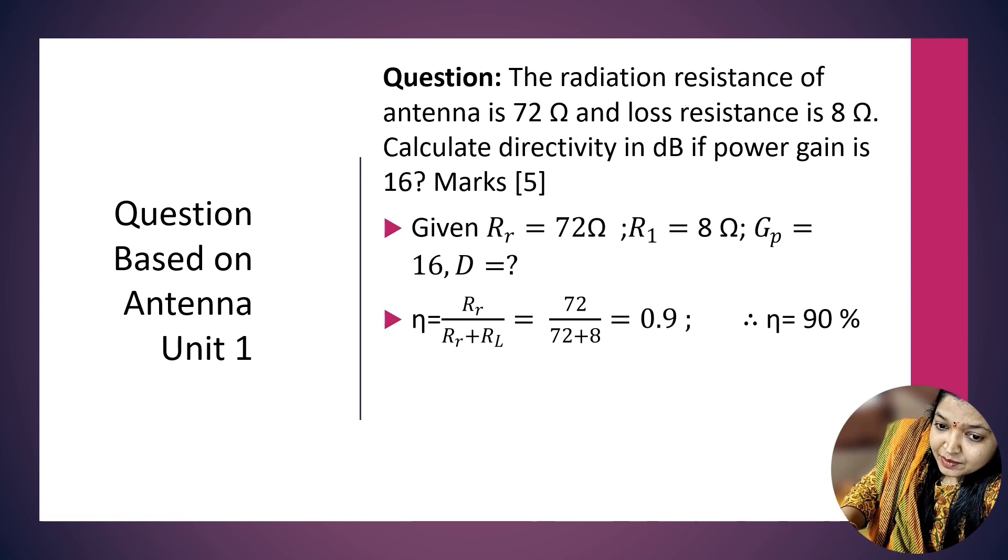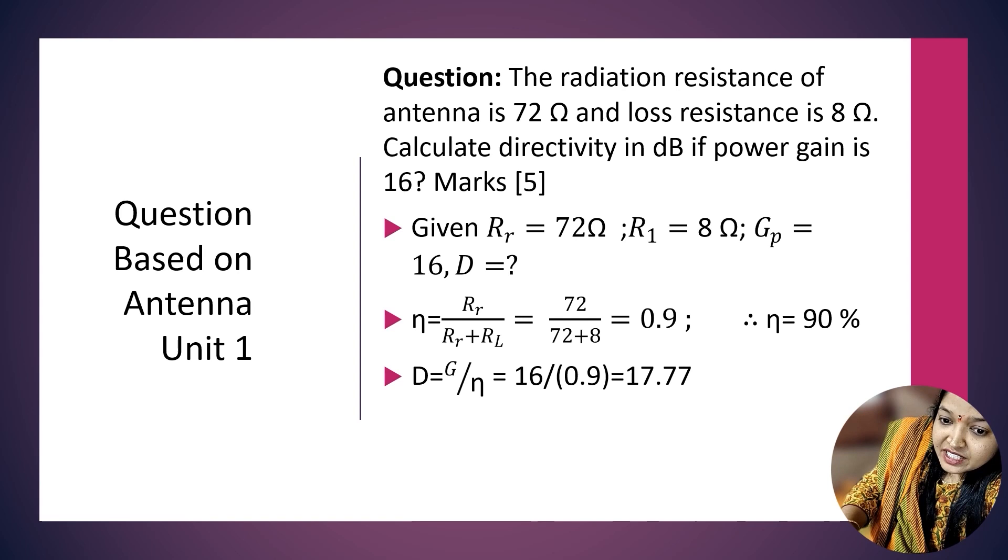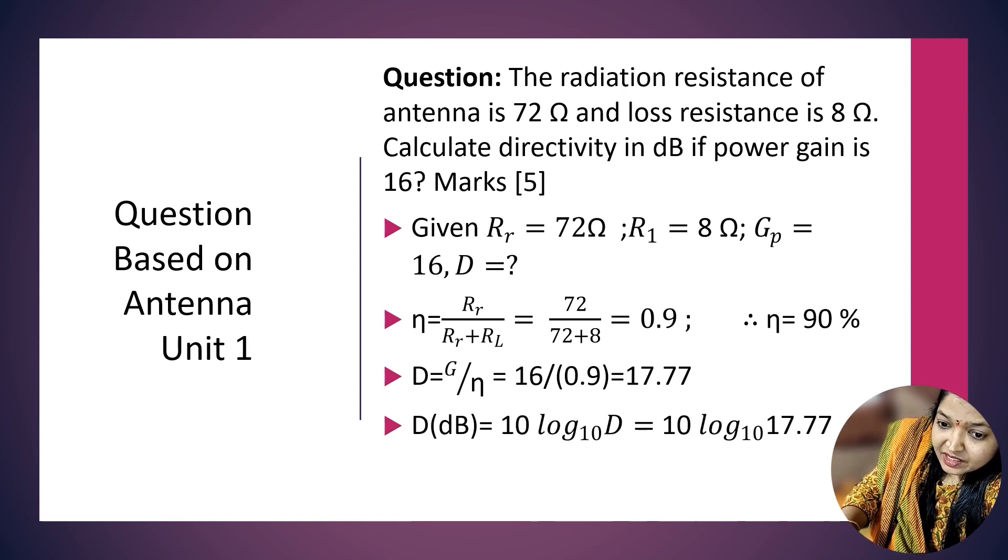Calculating: η = 72/(72+8) = 0.9, so efficiency is 90%. Directivity D = G/η = 16/0.9 = 17.77.